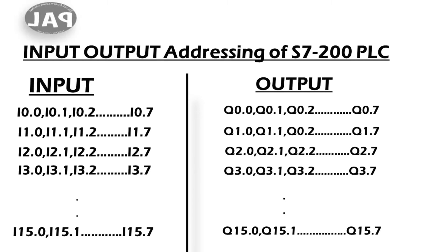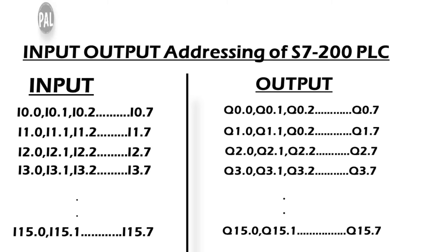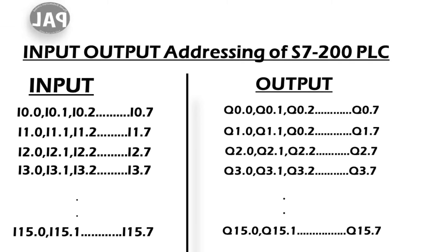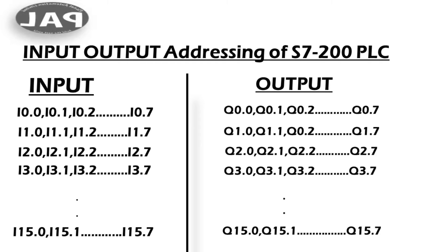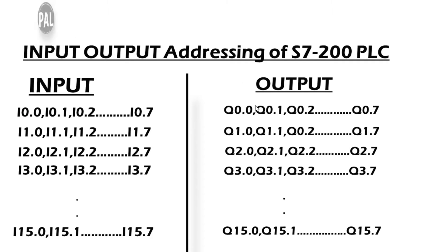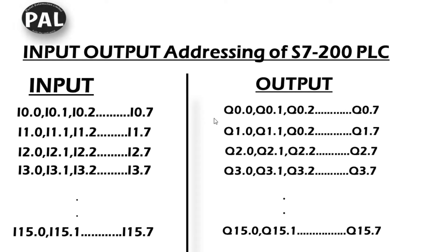This addressing is similar across all Siemens PLC families — S200, S300, S400, S1200, and S1500. You may find slight differences, for example in the S300 the addressing starts at I124.0, but I is always fixed for input and Q is always fixed for output. This is the simple difference across any kind of Siemens PLC.